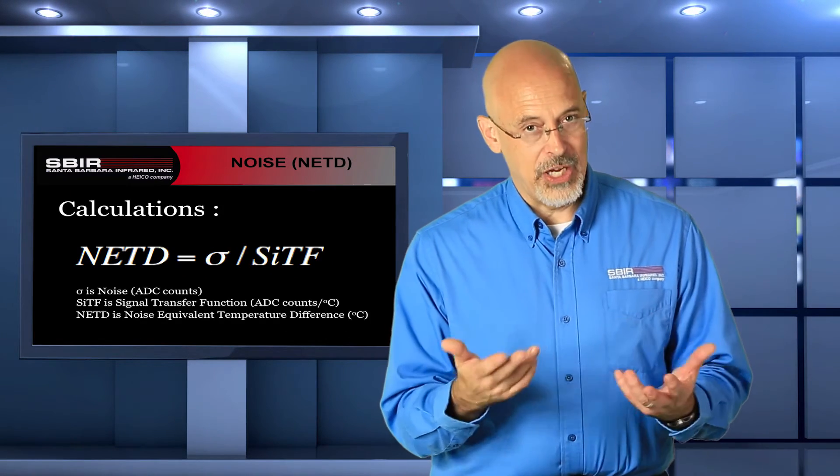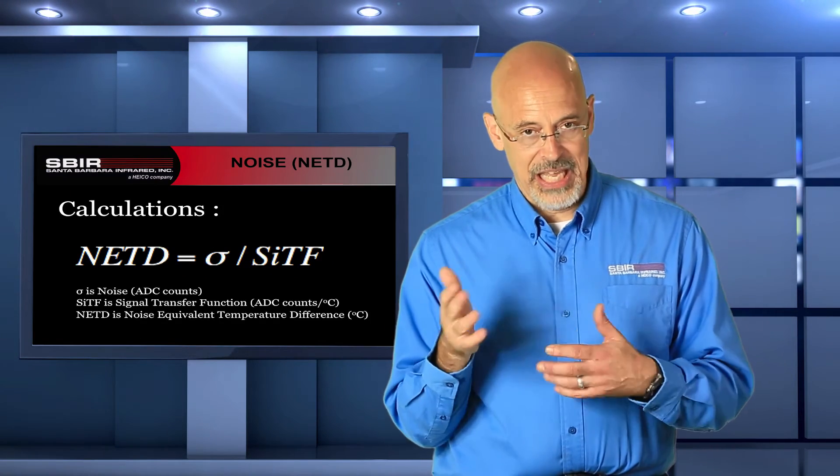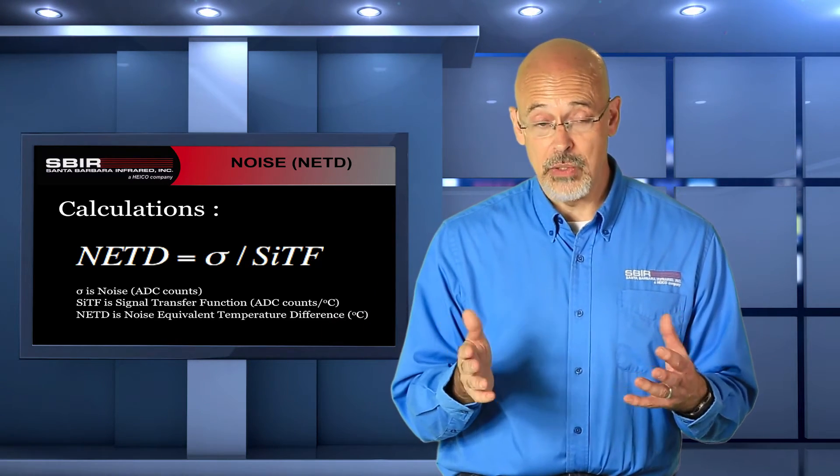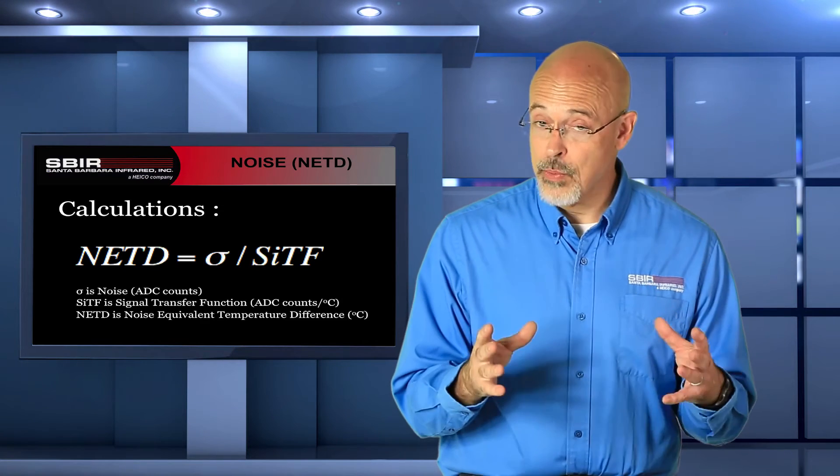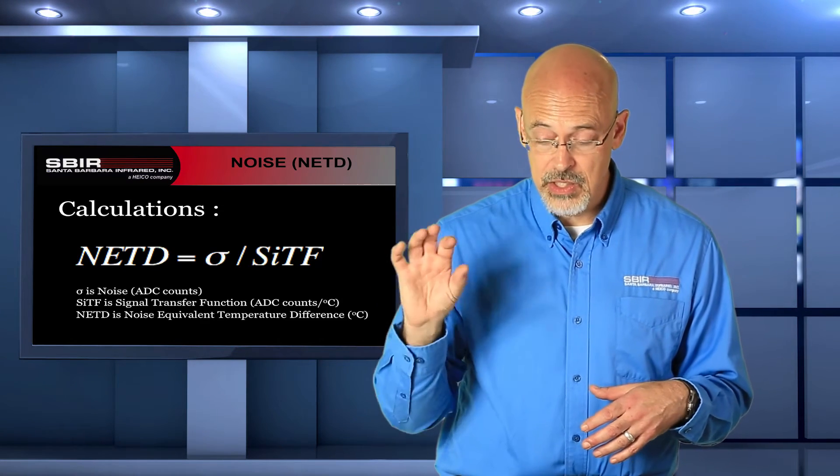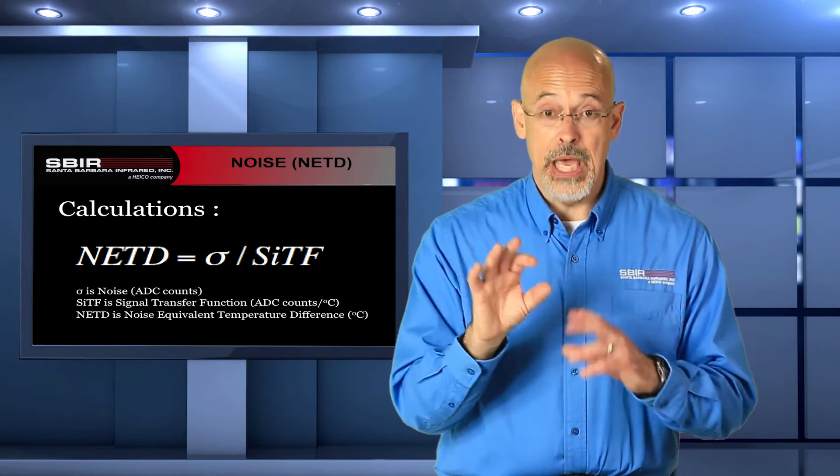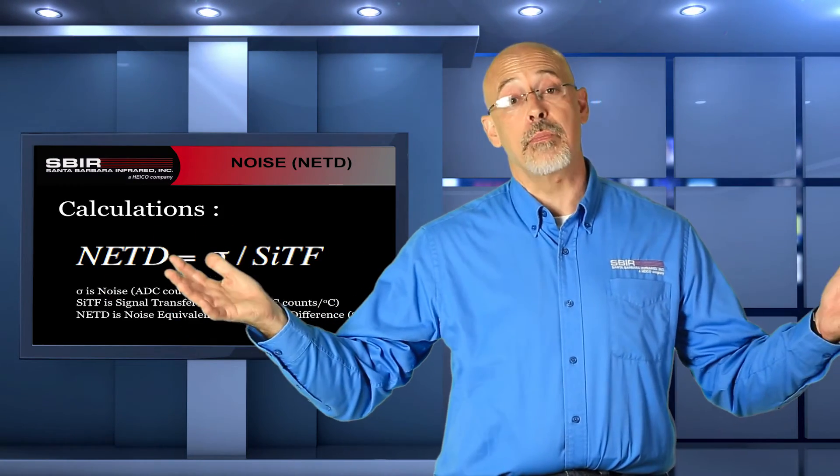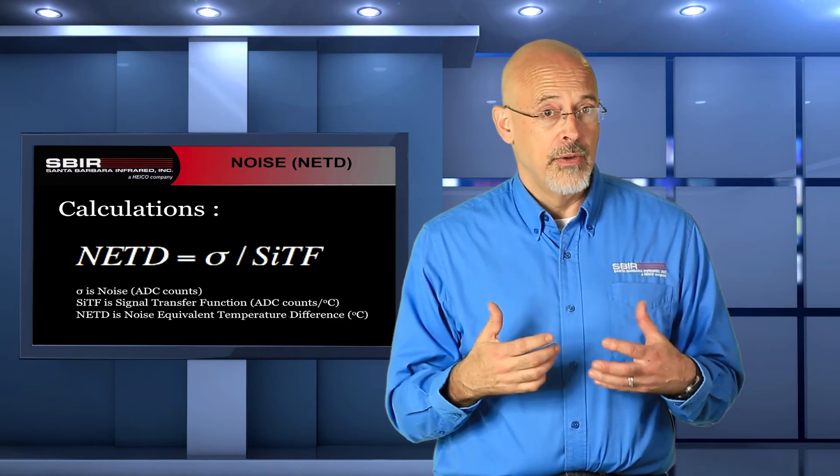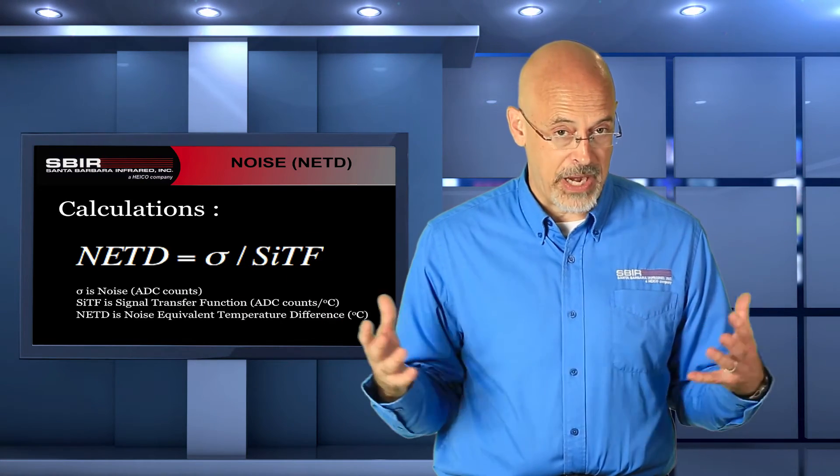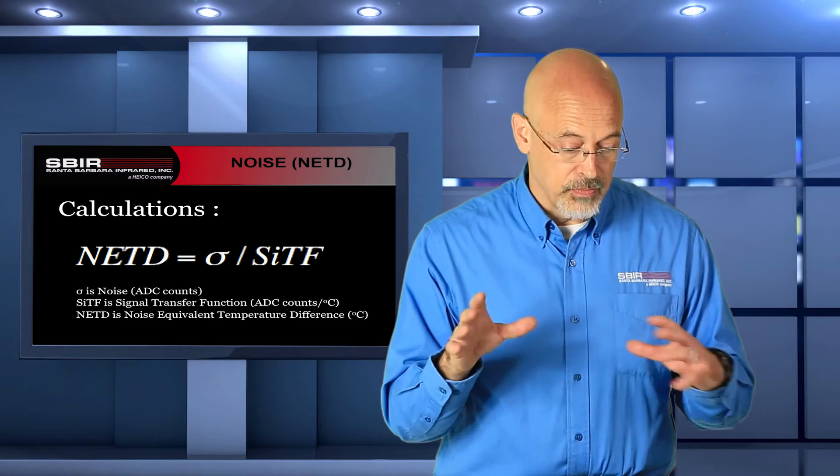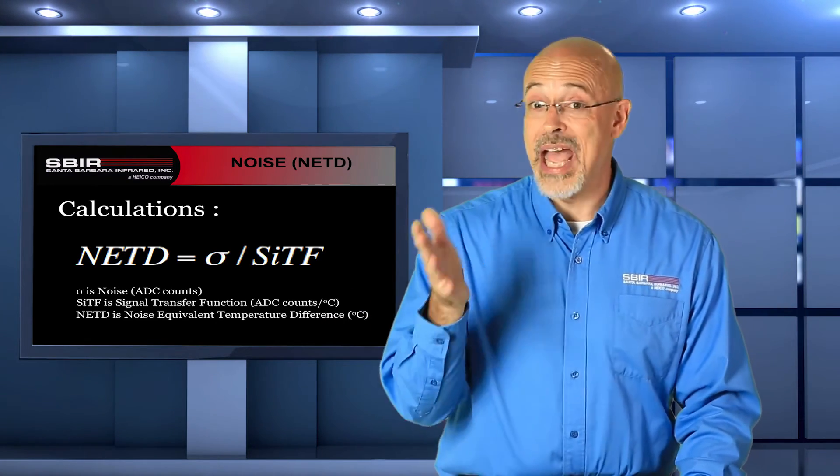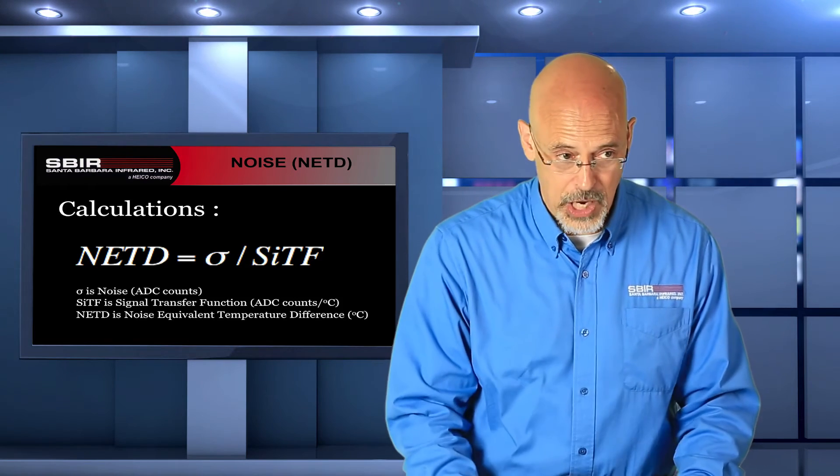There are variations on that name you'll see. Some people call it NEDT, noise equivalent differential temperature. Some people leave off the D altogether and just call it the NET measurement. They all refer to this normalized value where we've taken the noise of the system and we've converted it to temperature. And we do that because now we can actually compare cameras from different manufacturers. This is the first figure of merit that we can use for comparing different cameras.